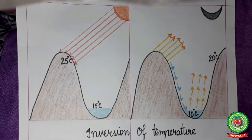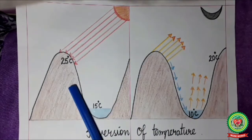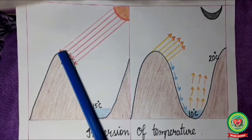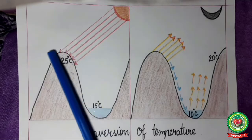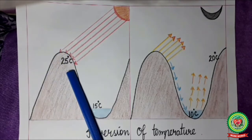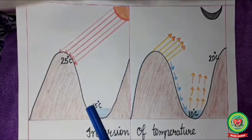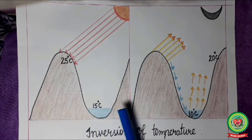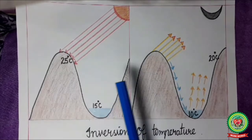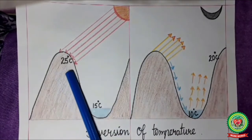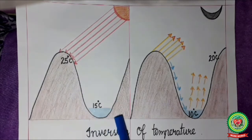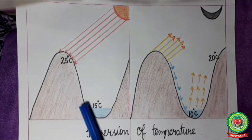Temperature inversion can mostly be experienced in mountainous areas. During daytime, sun rays fall on the mountain slopes and the upper part of the mountain is intensely heated. The valleys, however, do not receive direct sun rays, and since valleys are often covered with water, water takes time to heat up. So during the day, the mountain temperature may reach 25 degrees Celsius while the valley stays cooler at around 15 degrees Celsius — demonstrating inversion of temperature.